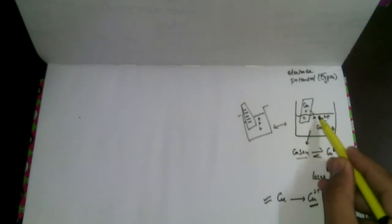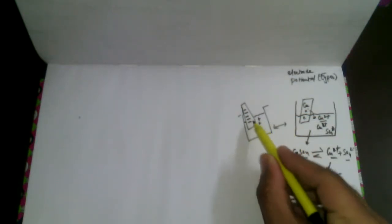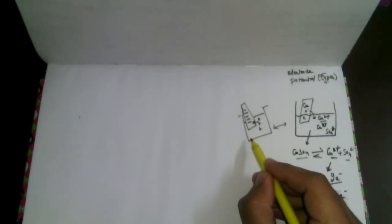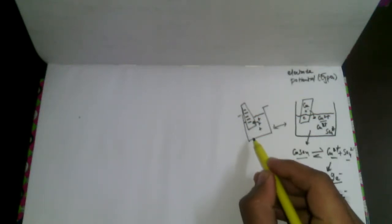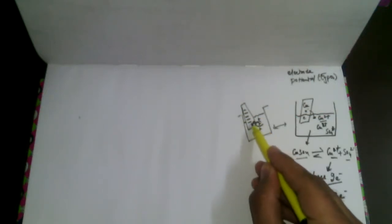Vice versa: if the concentration of ions in the solution increases, the excess positive charges will again gain electrons from this rod and stick to it. As a result, the overall quantity of negative charge on the rod reduces when positive ions stick to the rod, and a positive charge is imparted to the rod.